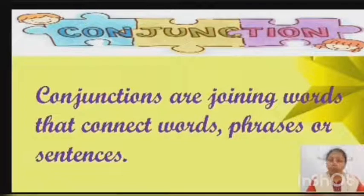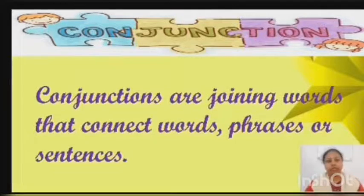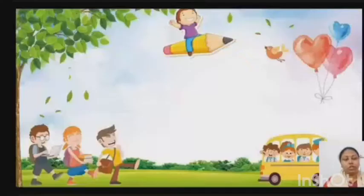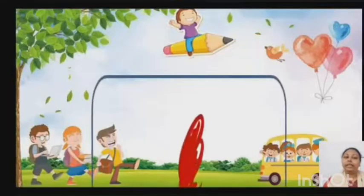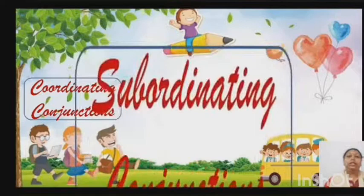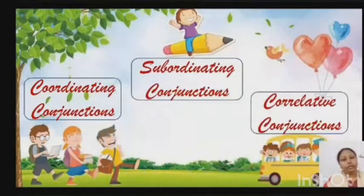Conjunctions are the joining words that connect words, phrases, clauses, or sentences together. They are also known as joining words or connectors. There are three different types of conjunctions: coordinating conjunctions, subordinating conjunctions, and correlative conjunctions.